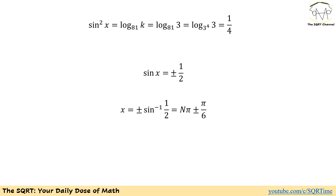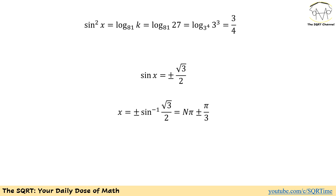Now we have sine of x and we are going to find x. For pi over 6 we have 1 over 2 as the sine. So in general, x equals n times pi plus or minus pi over 6, where n is a non-negative integer. On the other hand, if k equals to 27, we can write sine squared of x as 3 over 4. Sine of x is plus or minus square root of 3 over 2, and then x equals n times pi plus or minus pi over 3, where n can be a non-negative integer.